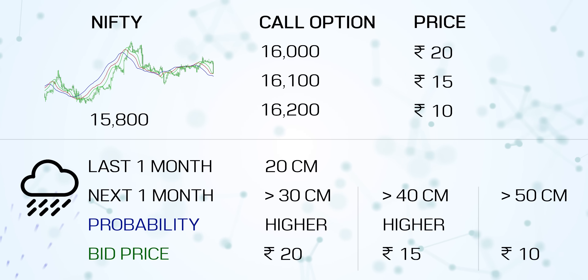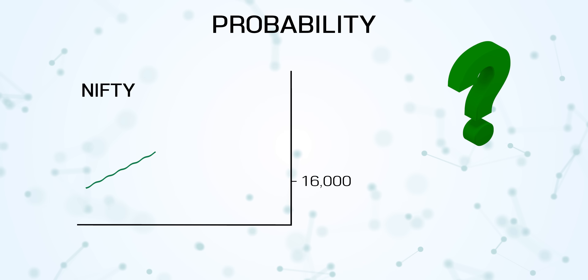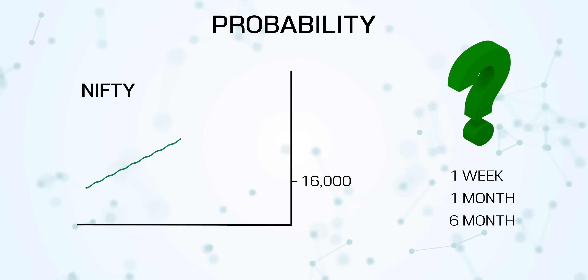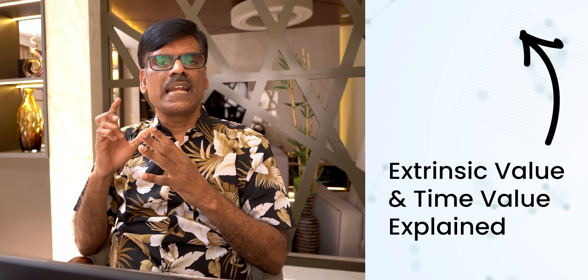But probability is not only based on the distance — it is also based on time. What is the probability of market going above 16,000 in one week, one month, or six months? If you are talking about a one-year timeframe, surely it will go above 16,000. So the higher the time value, the higher will be the price. All out-of-the-money options have only extrinsic value, and that extrinsic value exists because of time value. As time goes, this extrinsic value keeps coming down because the probability of the event happening keeps declining.